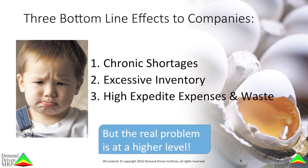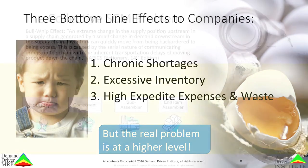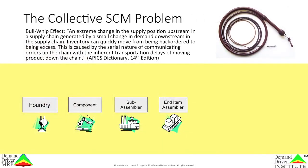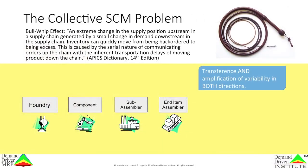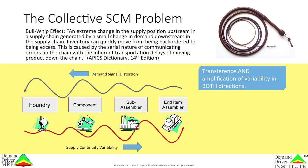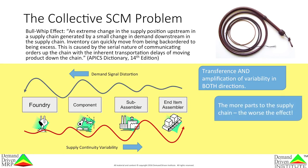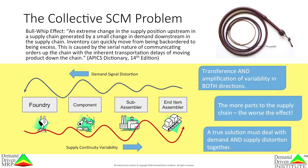It means chronic and frequent shortages while also having excessive inventory and incurring high expenses due to expedite and waste. Yet this is only at the single company level, and a single company is only one component of the collective supply chain. The collective problem is one that wreaks havoc on modern supply chains. It is called the bullwhip effect — the transference and amplification of variability up and down the chain. It is bi-directional. The more parts to the chain, the worse the effect. Any lasting solution to the bullwhip must address the bi-directional nature of the problem.